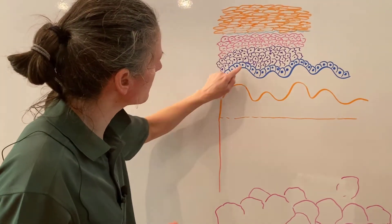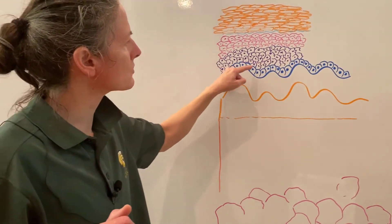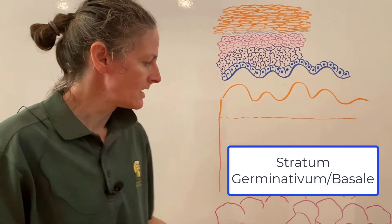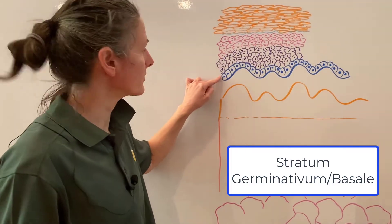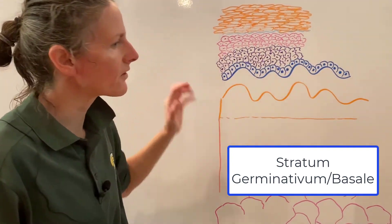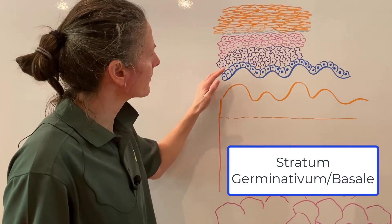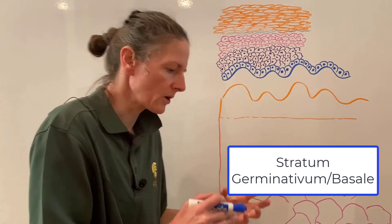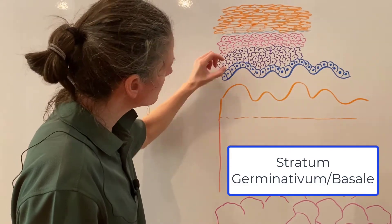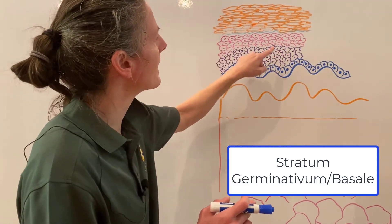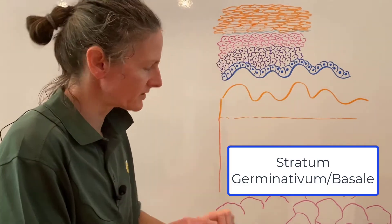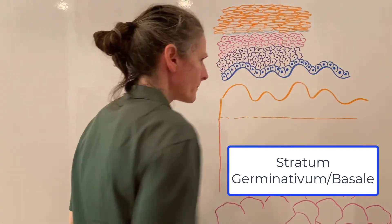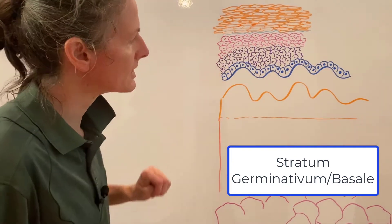Starting at the base layer: the stratum germinativum, also called the stratum basale, is the germinative layer where cells are reproducing. These cuboidal cells have all the cellular machinery to reproduce. Stem cells here divide, with one daughter cell staying in the stratum germinativum and the other being pushed up into the next layer. It is the bottom-most, deepest layer of the epidermis.